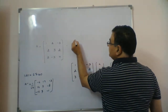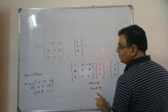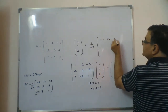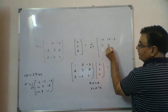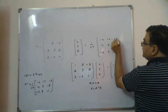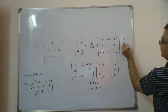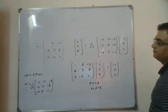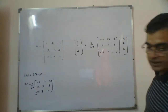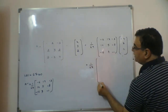So x, y, z equals A inverse times B. A inverse is (1/67) times the matrix with entries: -6, 17, 13; 14, 5, -8; -15, 9, -1. Then it is multiplied by B which is -4, 2, and 11. Now we solve it: (1/67) times the result.